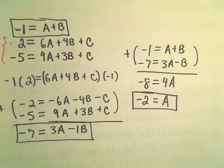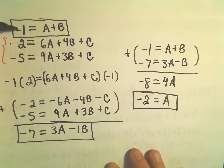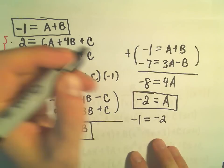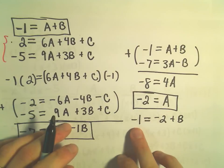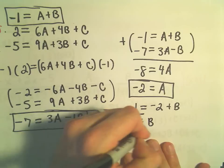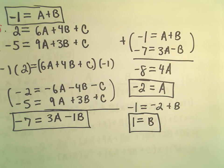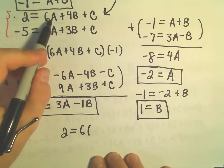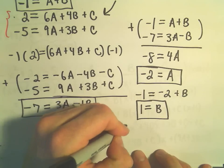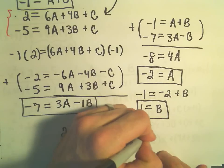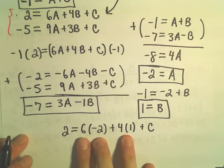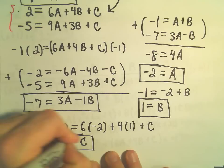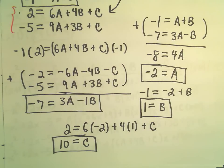With a equals negative 2, I can use negative 1 equals a plus b: negative 1 equals negative 2 plus b, so adding 2 to both sides gives b equals positive 1. Then using the second equation: 2 equals 6 times negative 2 plus 4 times positive 1 plus c, which is negative 12 plus 4, so negative 8 plus c equals 2, giving c equals 10.